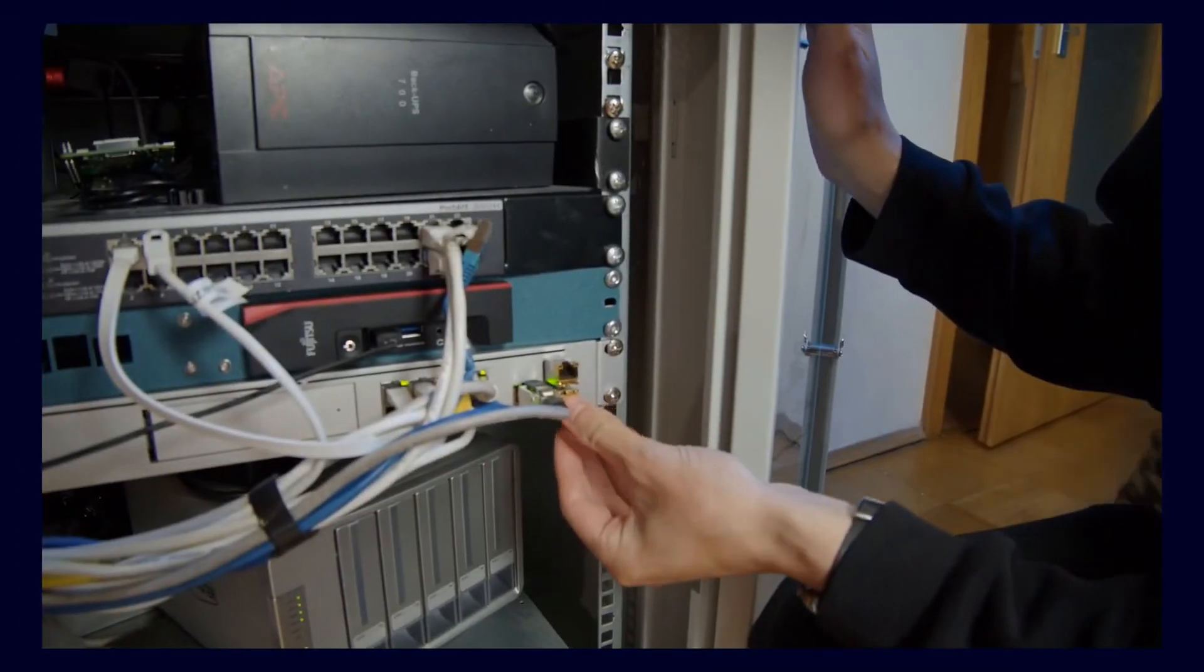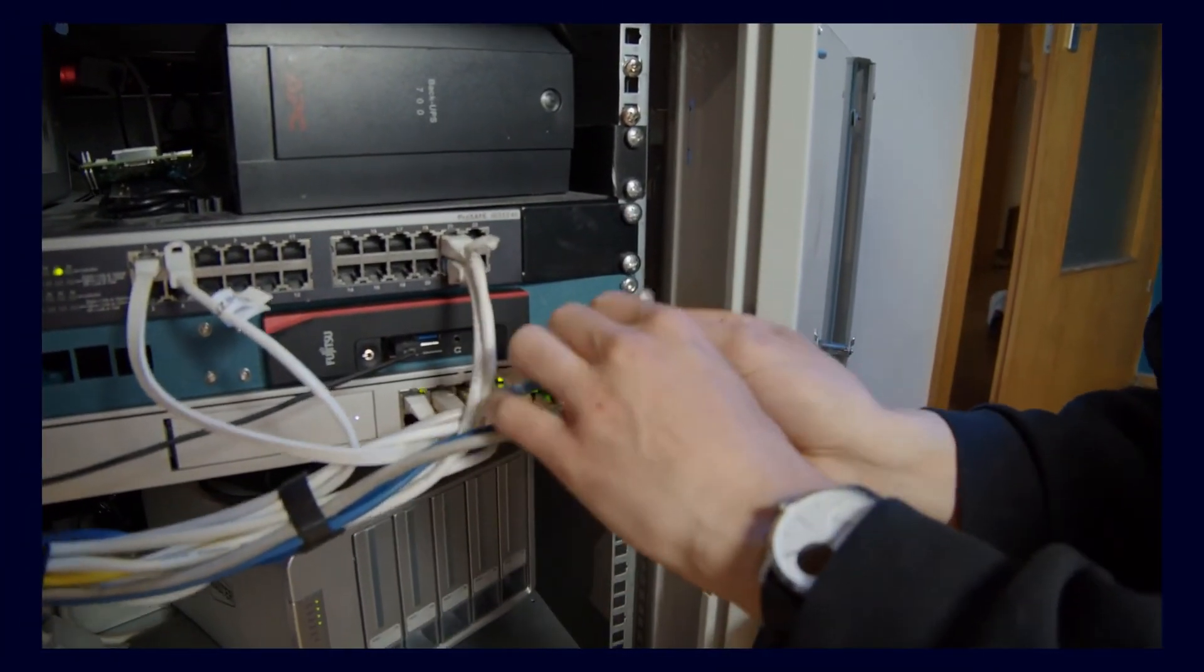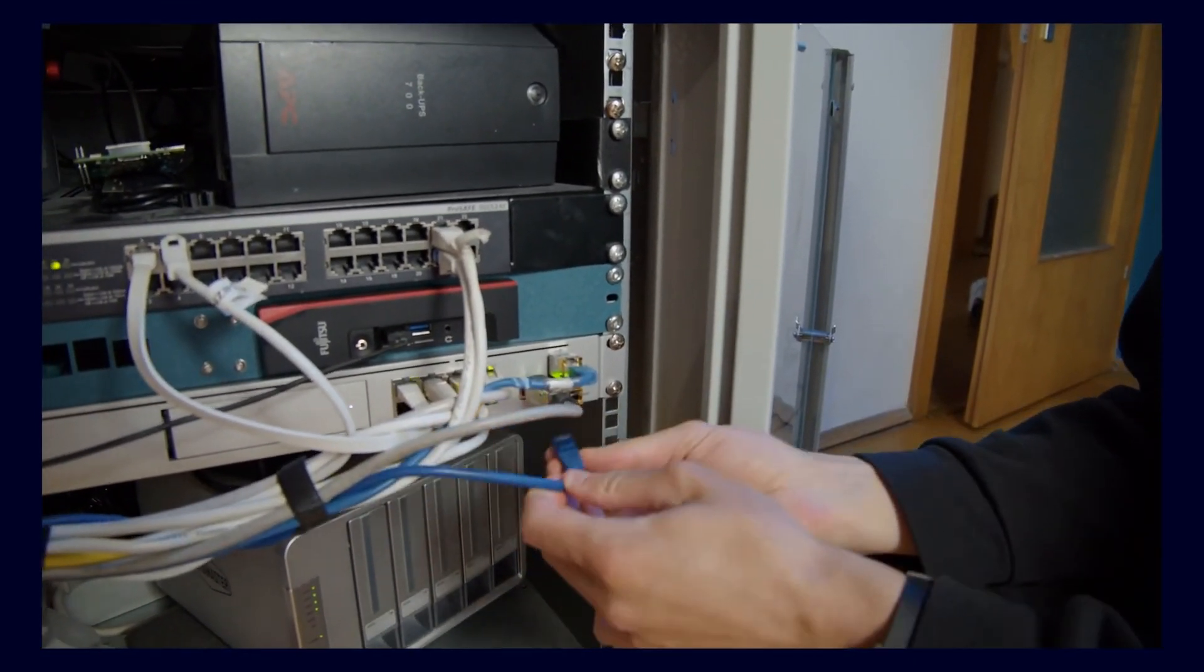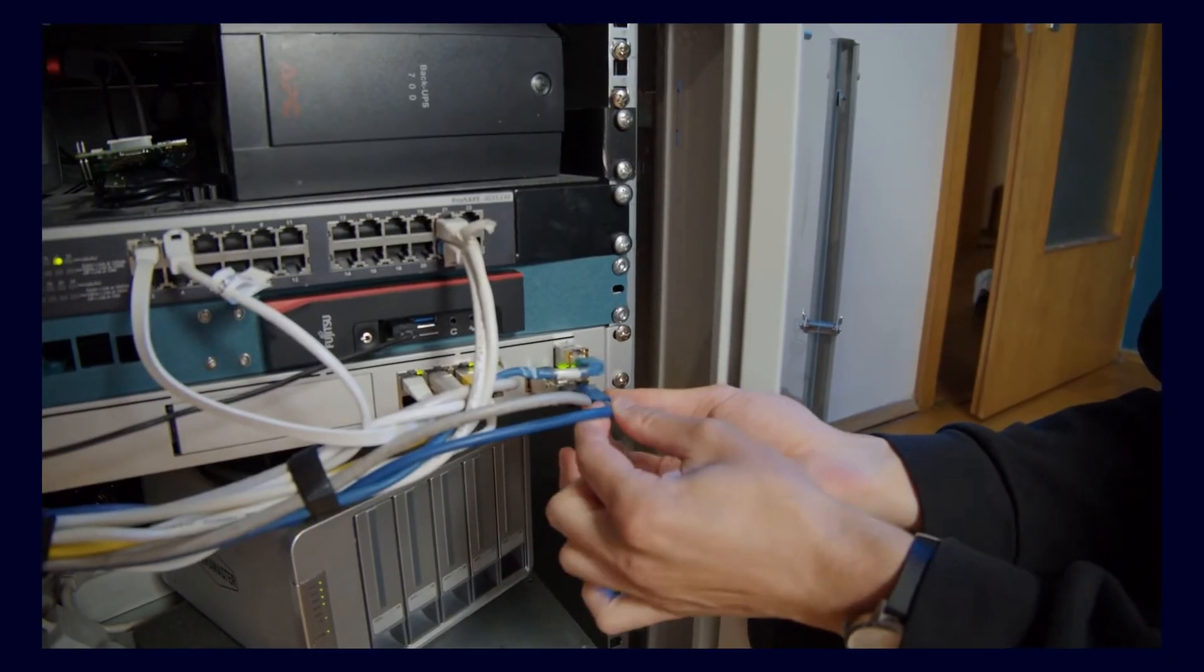First of all, in the server cabinet, because that is, as mentioned, the main hub. Here we will first install the 10 gigabits and simultaneously integrate my home server so that it runs on 10 gigabits. Now that this, and actually the main point, is accomplished, we will start with the second node and upgrade it to 10 gigabits as well.